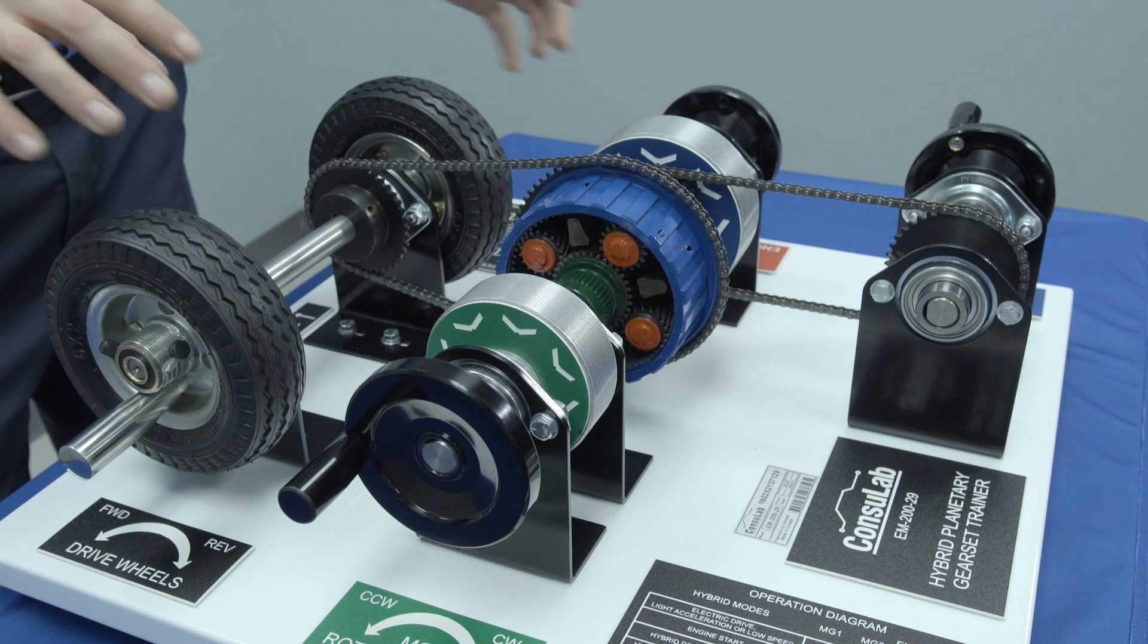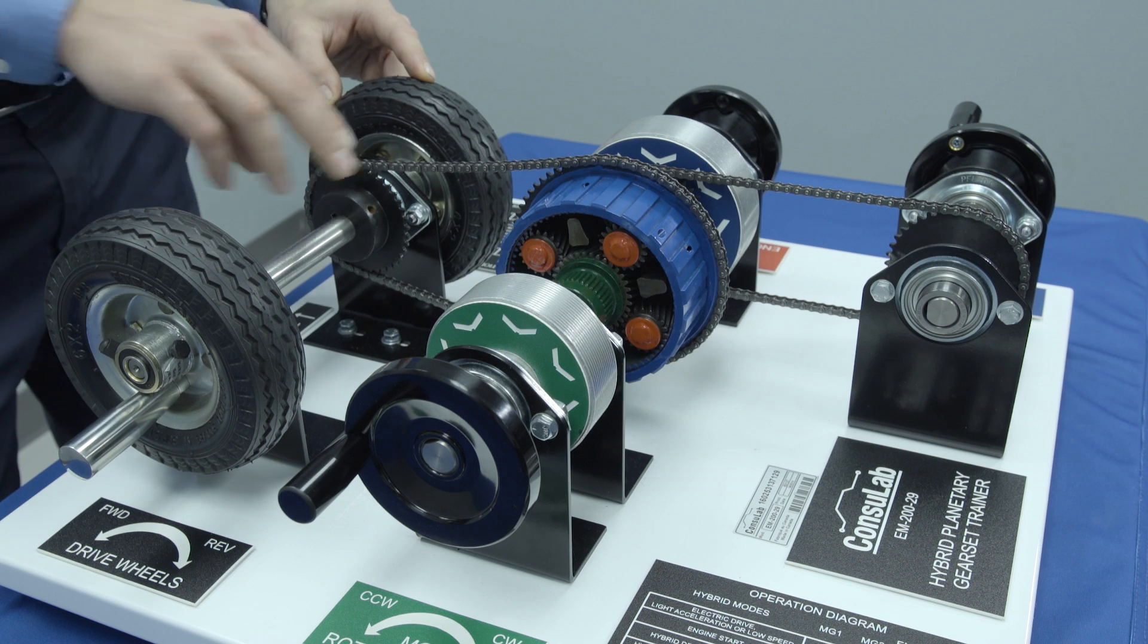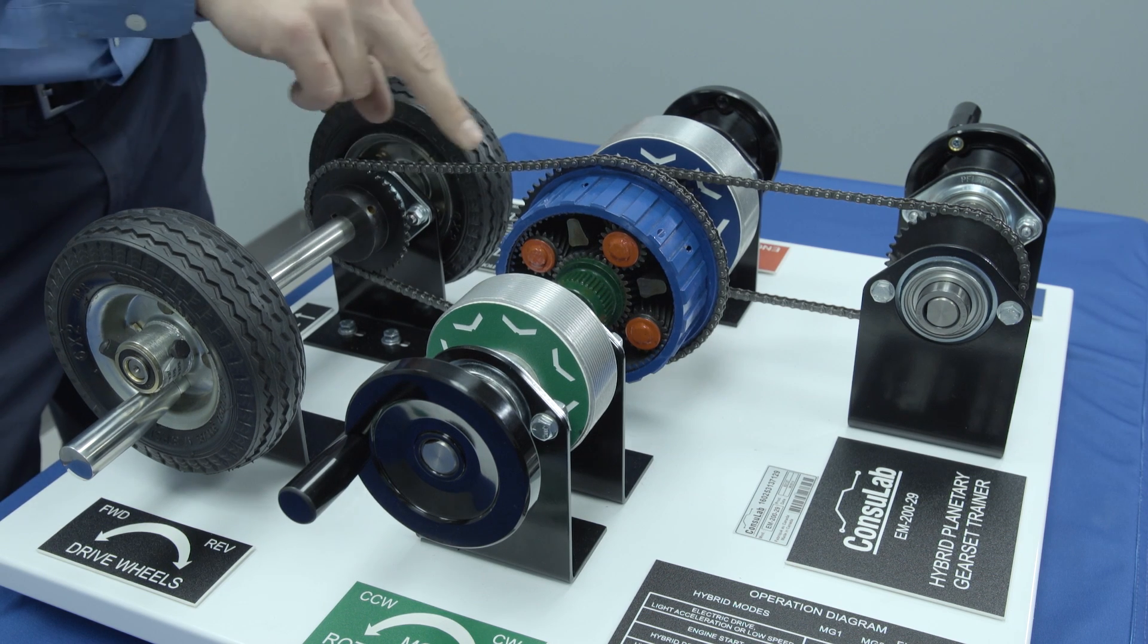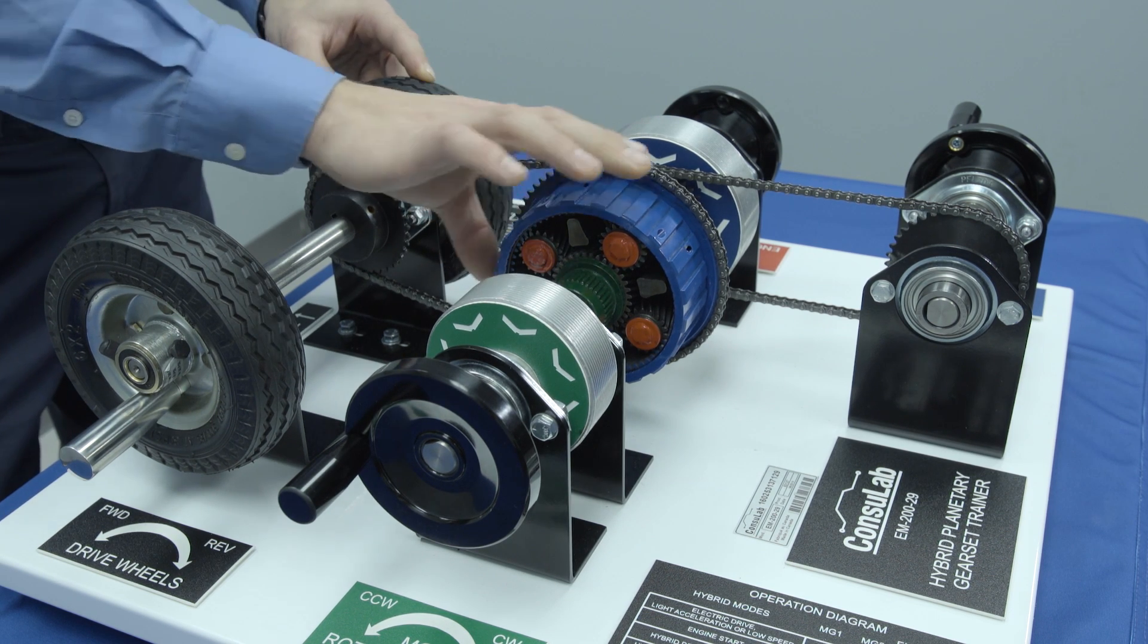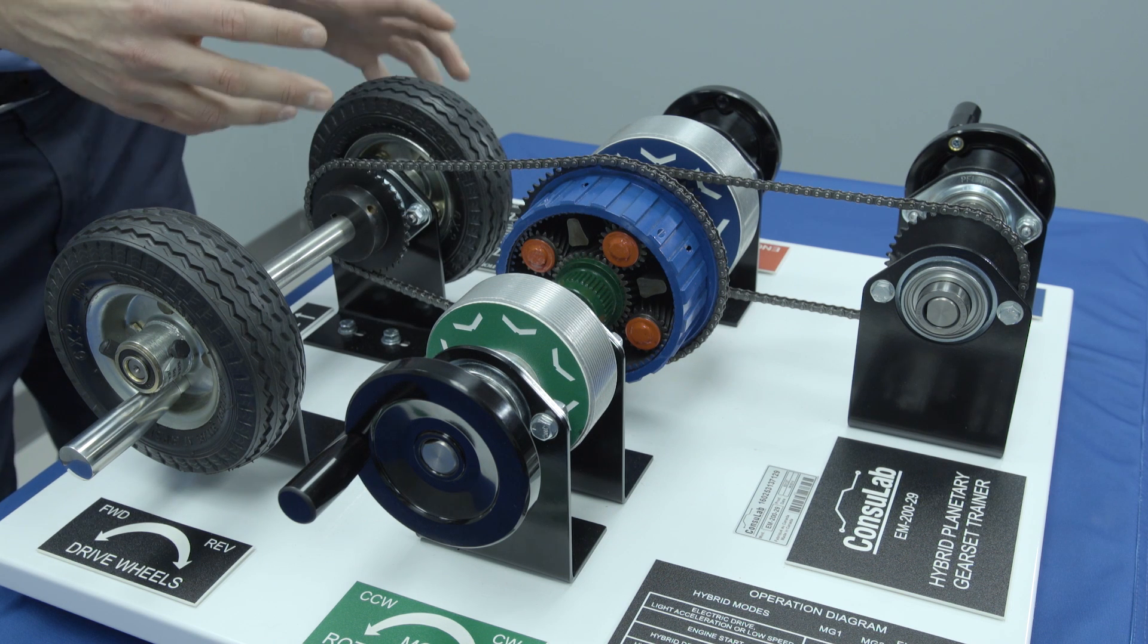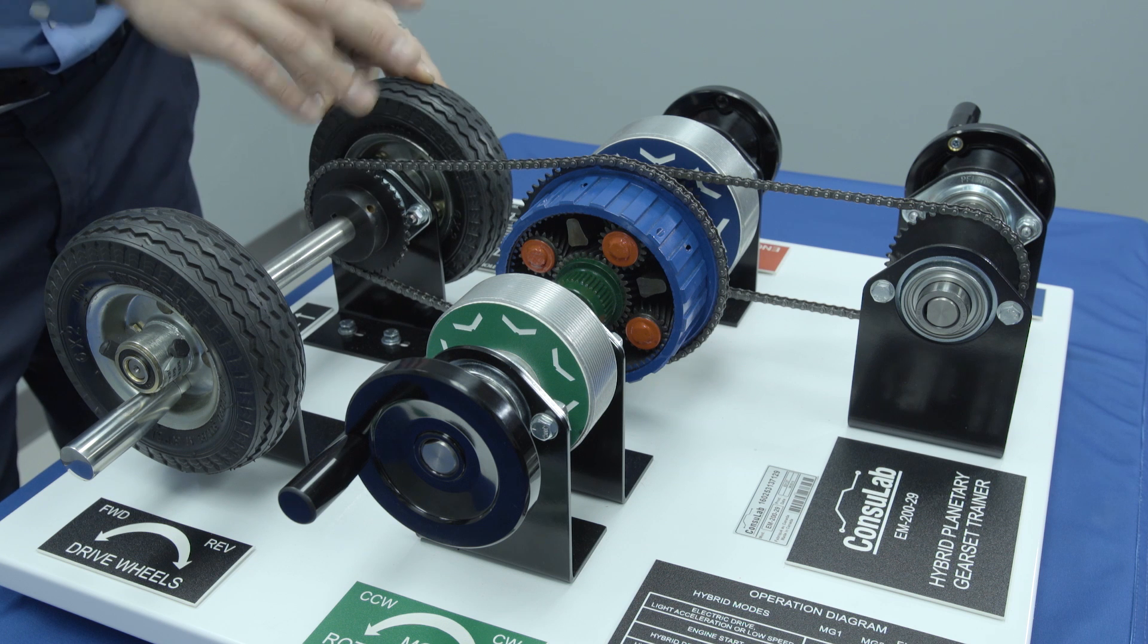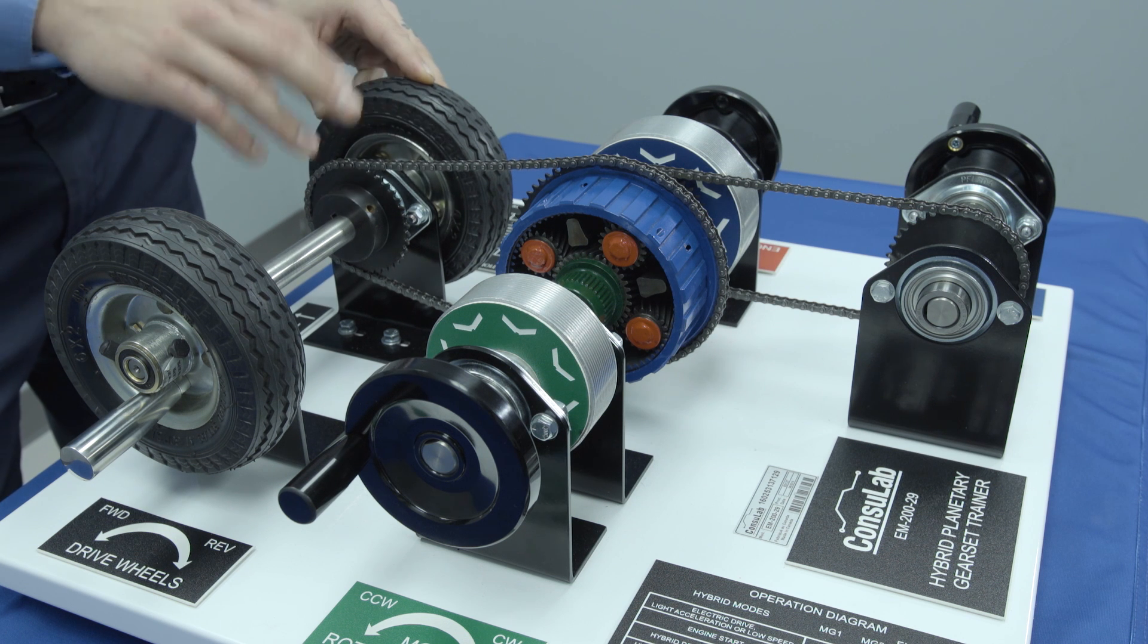This is because on a series-parallel hybrid system we have the drive wheels which are continuously connected at all times with the planetary gear set. In real life this could be a chain, this could be a set of gears. The principle stays the same. For our product we have used the chain.